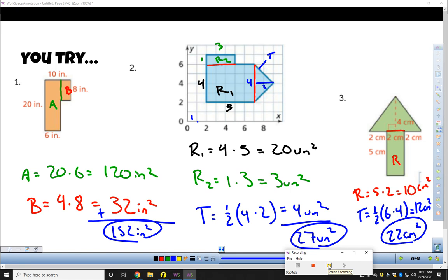In number 1, I broke it up into rectangles A and B. A in green, 20 by 6. B in red. The 4 came because if this distance is 6 and this distance is 10, that leaves a leftover of 4 for that little teeny ledge.